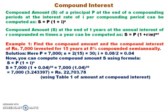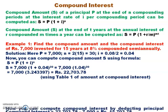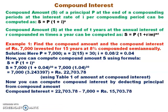Using this value, S equals rupees 22,703.78. The compound interest is then found by deducting the principal from the compound amount: compound interest equals rupees 22,703.78 minus 7000, which comes to rupees 15,703.78.